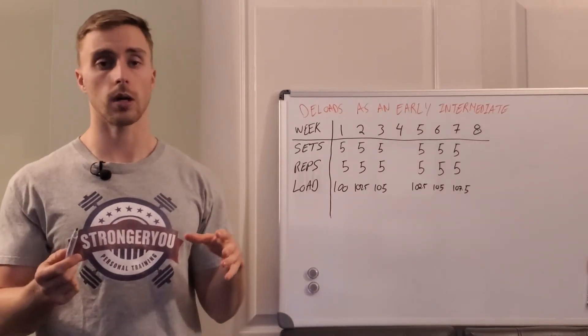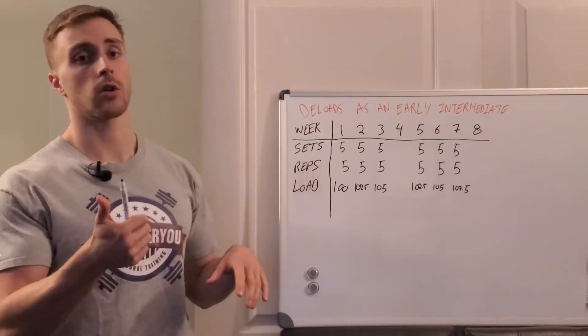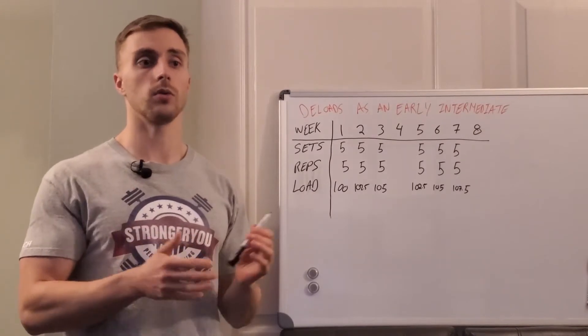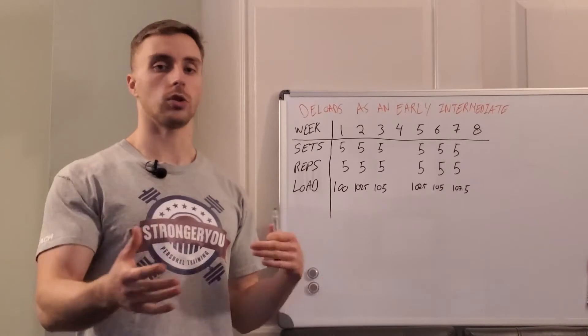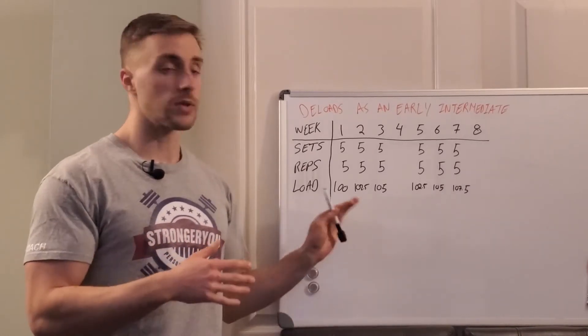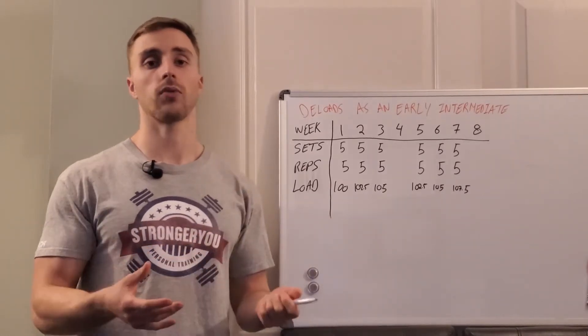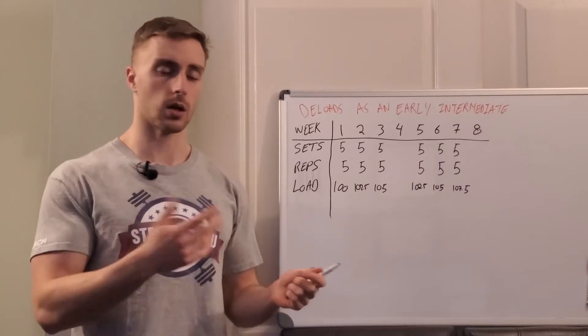So we're going to make a couple assumptions as we're writing this program. Assumption one is that you're operating on a four-week structure, so if you take five or six or seven weeks to peak or three weeks to peak, adjust accordingly. And the second thing we're going to assume here is that you're using a plus four minus two structure as we talked about a second ago.